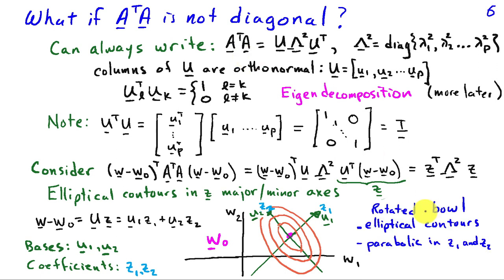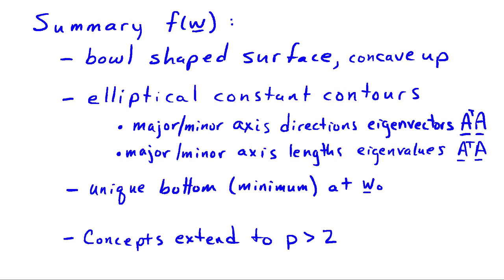The bowl in three dimensions — thinking of f(w) as the height above the w₁-w₂ plane — is still a bowl-shaped surface: an elliptical bowl with parabolic cross sections along the z₁ and z₂ coordinates, corresponding to the u₁ and u₂ directions in w. In summary, the squared error cost function f(w) represents a bowl-shaped surface that is concave up, with a unique minimum at w₀.